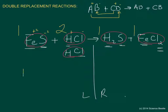Counting the compounds for coefficients: FeS is 1, HCl is 2, H₂S is 1, and FeCl₂ is 1. So the coefficient sequence is 1, 2, 1, 1. Those are the two examples for double replacement reactions. Go ahead and watch the next video and hopefully you'll get a lot more practice identifying all these types of chemical reactions.